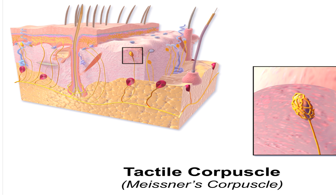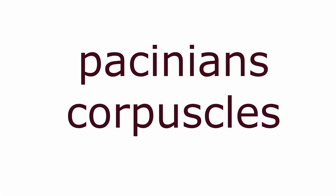This process of adaptation occurs in most sensory receptors and prevents the nervous system from being exhausted. Meissner's corpuscles also have the ability for two-point discrimination — they can identify that two nearby objects touching the skin are at two distinct points or different locations.